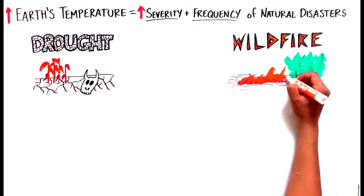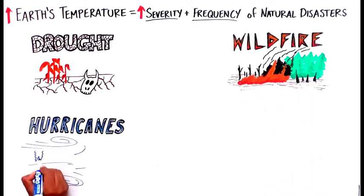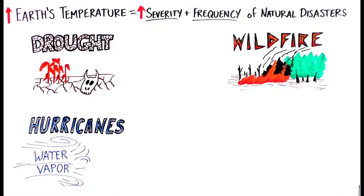High temperatures and dry land also make wildfires far more likely to ignite and spread. Warm air also retains more water vapor, which increases the intensity of severe storms like hurricanes.